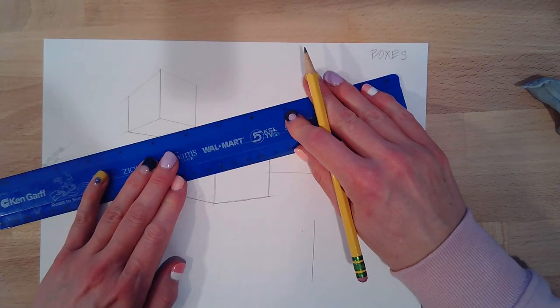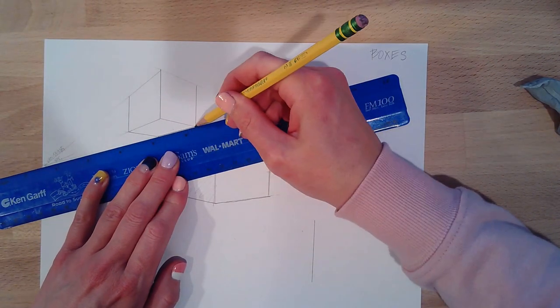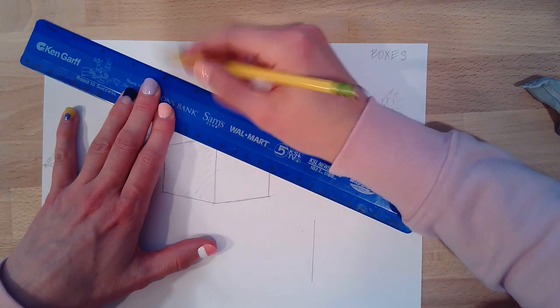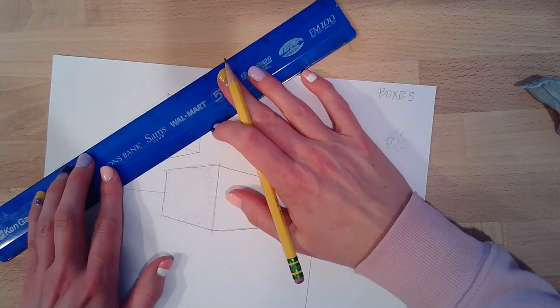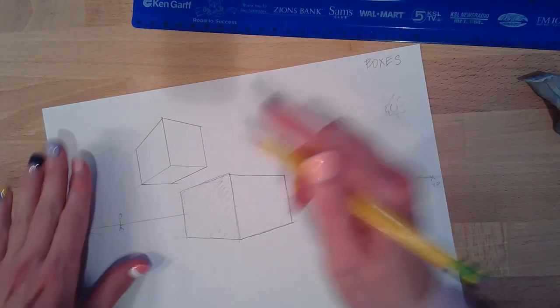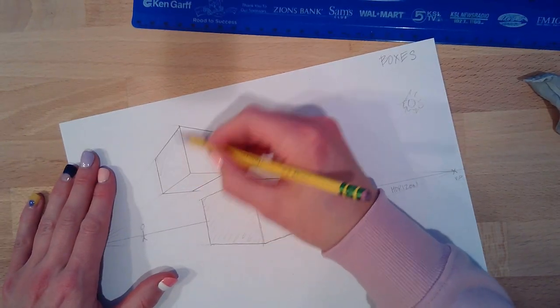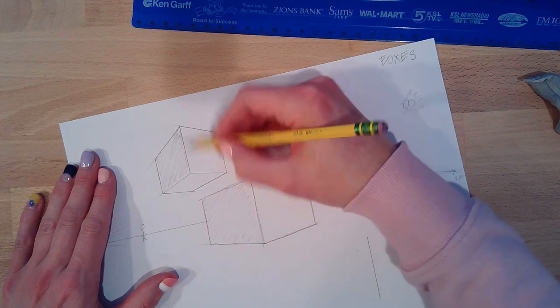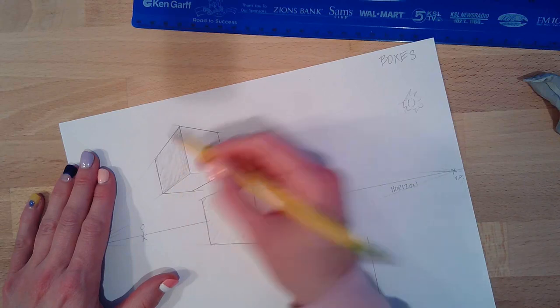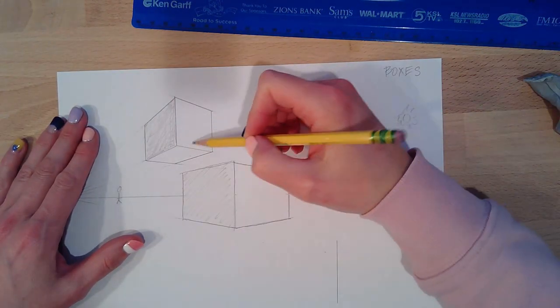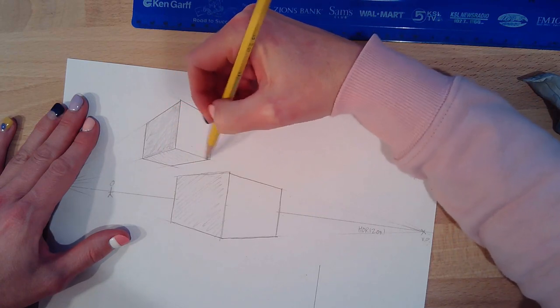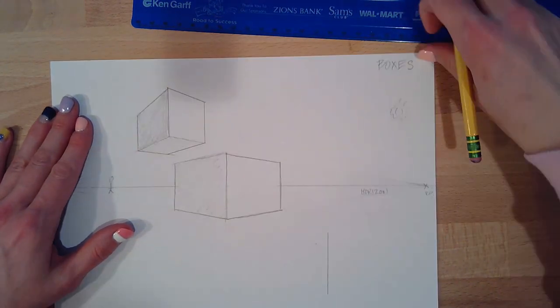And I'm going to remember where my light source is and shade that in. I can really take my time and shade that in later. And then this is my light side. And this might be a little bit darker too down here.